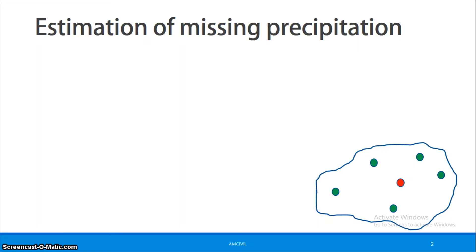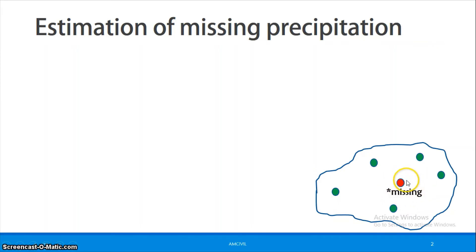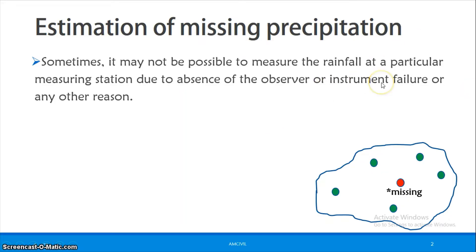We use rain gauges installed in the catchment to take rainfall readings. Due to technical issues — such as a non-recording gauge that an observer cannot read, or an automatic rain gauge failure — some stations may not record data. That station is then referred to as a missing station.